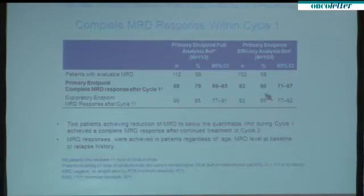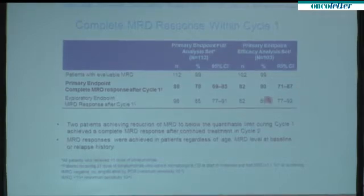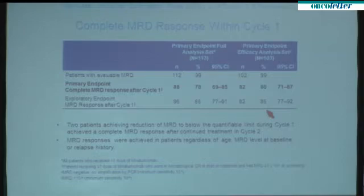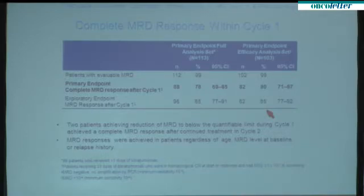The second patient group analyzed was the efficacy analysis set — a more relevant group of patients who truly fulfilled the entry criteria, had an MRD level above 10 to the minus 3, and had no full relapse. Here, the results were 80% complete MRD response and 85% MRD response. Interestingly, we did not find any prognostic factor for the achievement of MRD response — responses were achieved in patients at any age, in patients with prior relapse, and in patients with different MRD levels at the start of treatment.